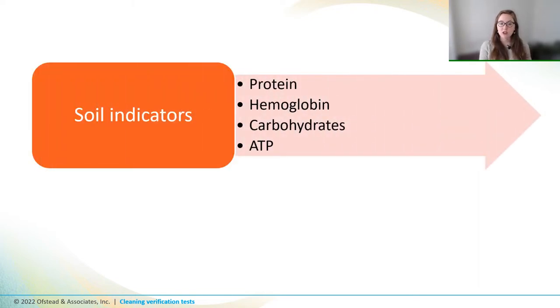When we think about biochemical tests that can determine if scopes are clean, there's really two buckets. First, there are tests that can determine if there's still soil by detecting protein, hemoglobin which is blood, carbohydrates, or ATP, or adenosine triphosphate, and this is a chemical that's released by living cells.